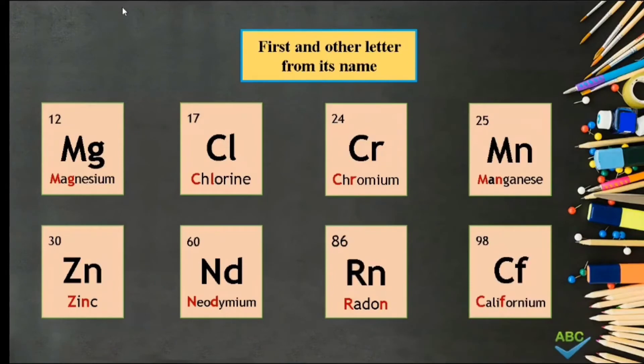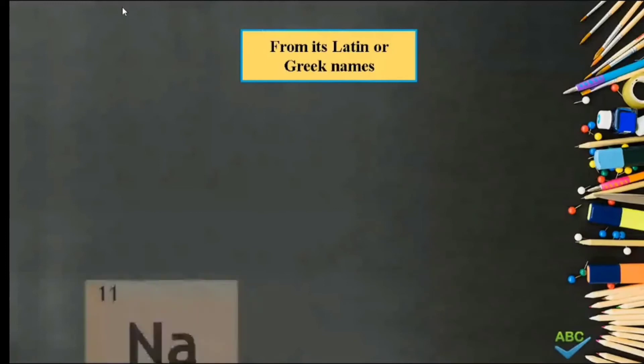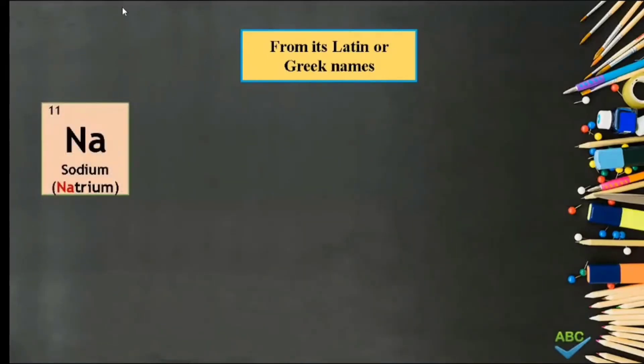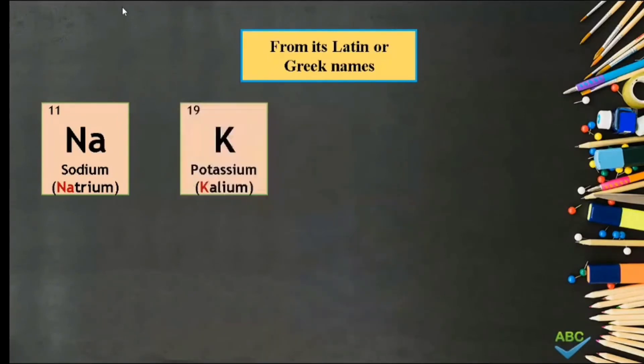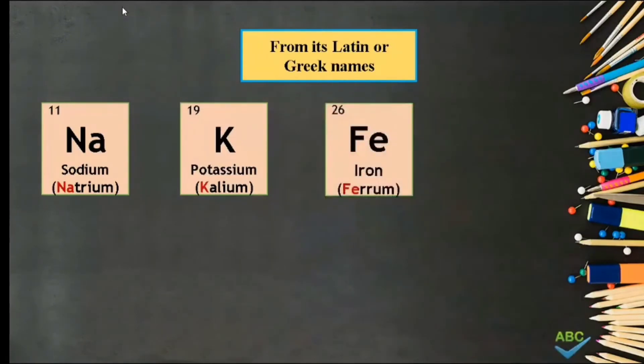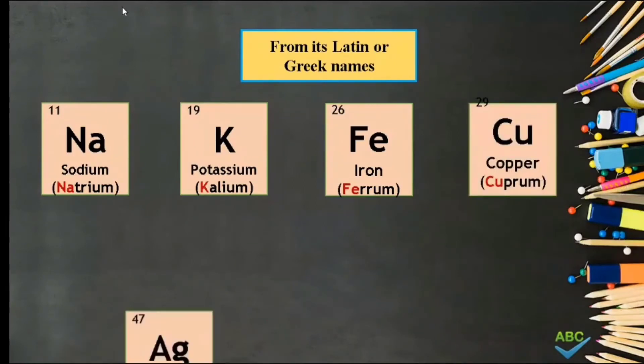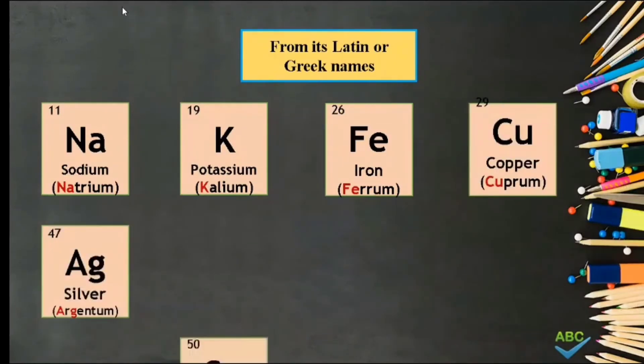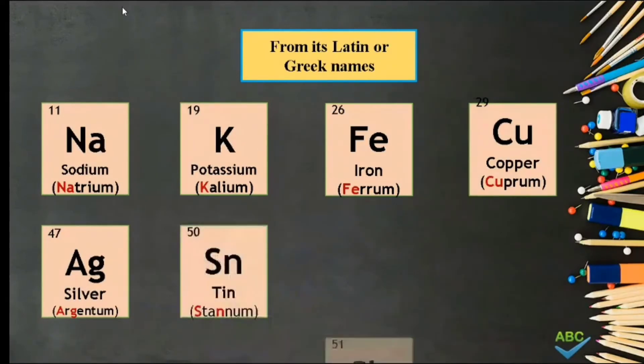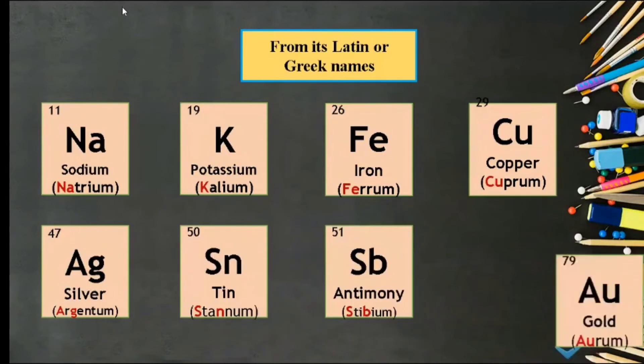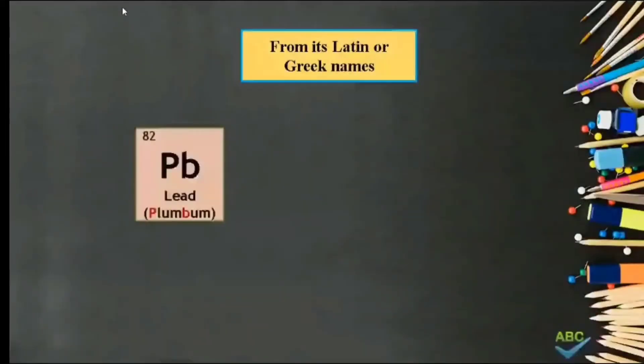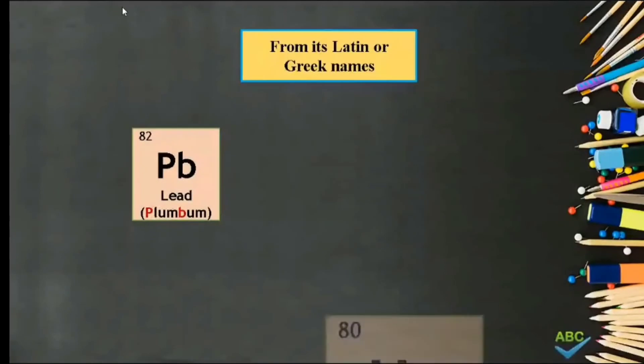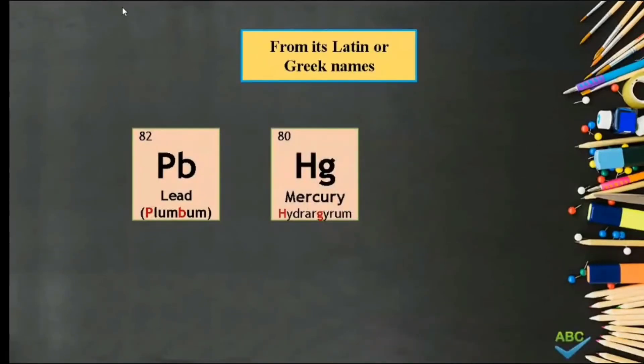Number 4. Based on its Latin or Greek names. Examples are Sodium Na from Latin Natrium, Potassium K from Kalium, Iron Fe from Ferrum, Copper Cu from Cuprum, Silver Ag from Argentum, Tin Sn from Stannum, Antimony Sb from Stibium, Gold Au from Aurum, Lead Pb from Plumbum, Mercury Hg from Hydrargyrum, and Tungsten W from Wolfram.